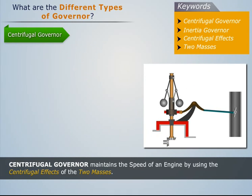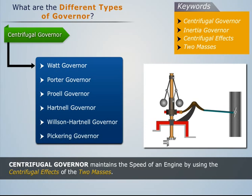The centrifugal governor is further classified as Watt governor, Porter governor, Proell governor, Hartnell governor, Wilson-Hartnell governor, and Pickering governor.